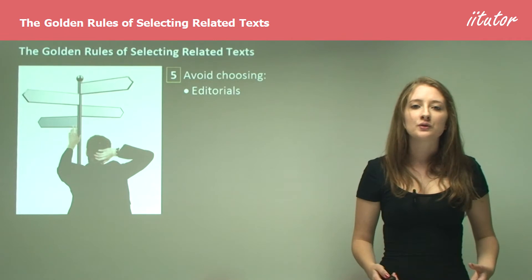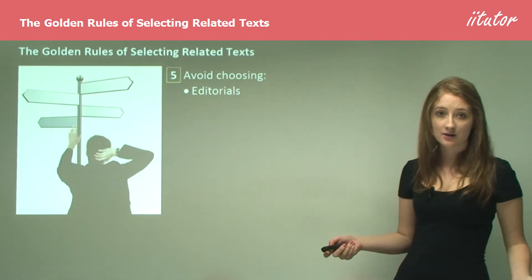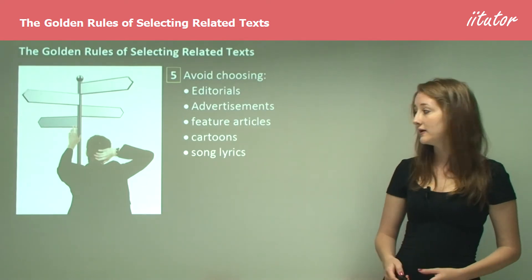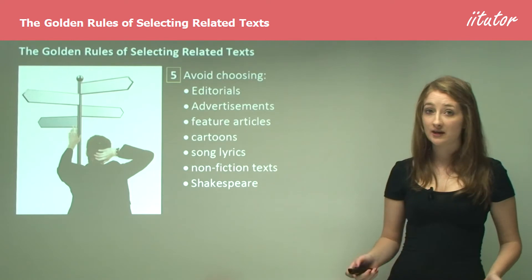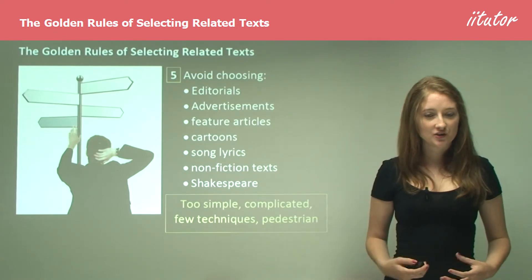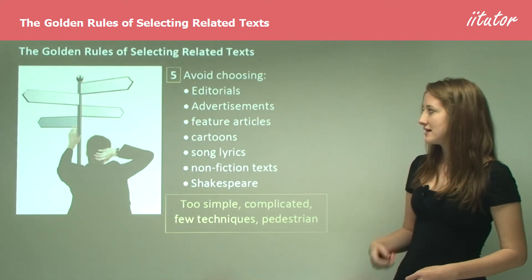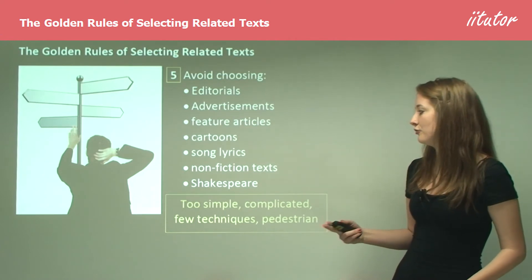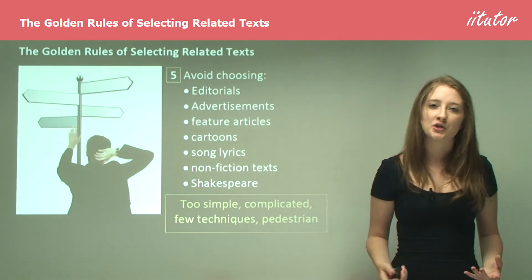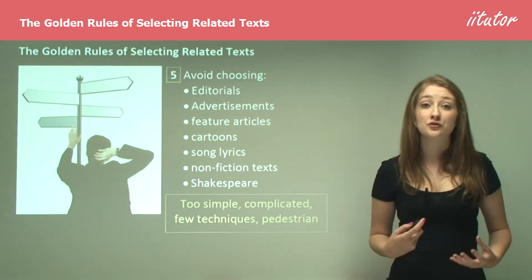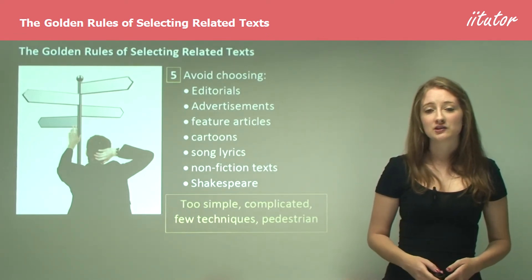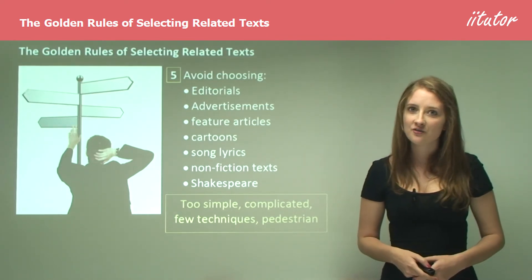The fifth golden rule is the things you should avoid choosing: editorials, advertisements, feature articles, cartoons, song lyrics, non-fiction texts, and Shakespeare. These texts all have something wrong about them which means that as an English student at your level, you're not going to be analyzing them completely successfully. They might be too simple — below your ability — or too complicated, have too few techniques, or be too pedestrian and boring, giving you nothing interesting enough to write a really strong essay.